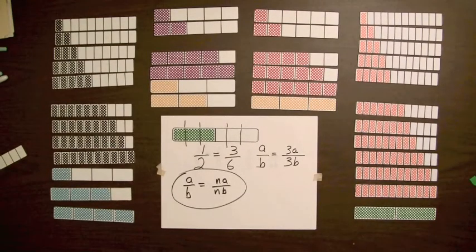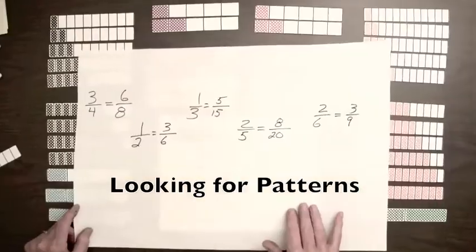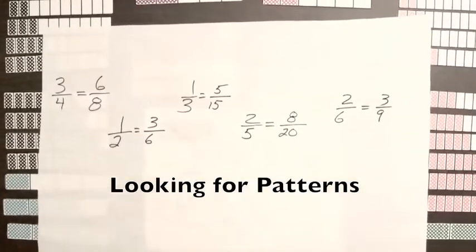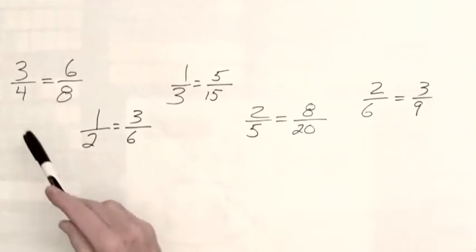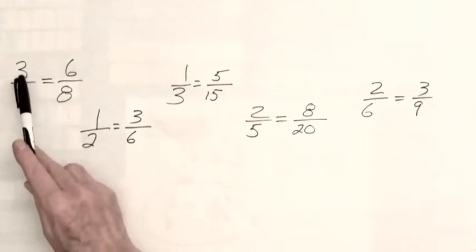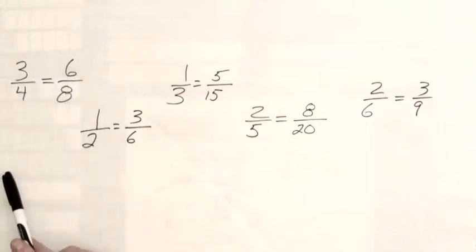If the equalities of fractions from these activities are listed on the board for students, they can look for patterns. They might notice the rule we've stated, that whatever number the numerator is multiplied by, the denominator is multiplied by the same number.